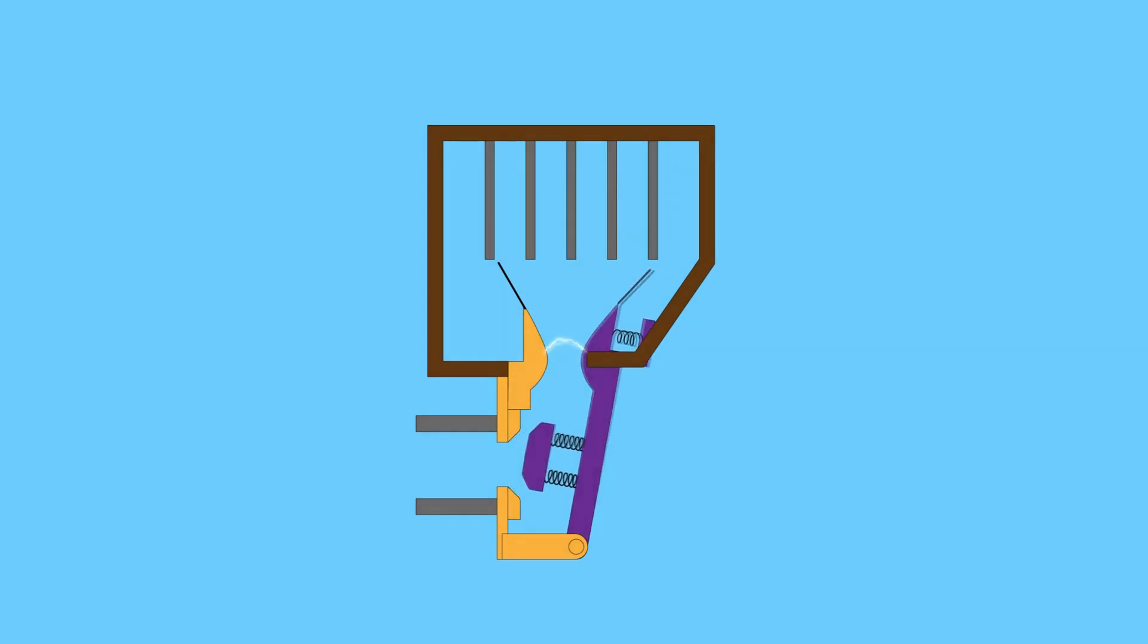When the main contacts open, the arcing contacts are still in touch with each other. The current gets a parallel low resistive path through the arcing contact. During the opening of the main contacts, there will not be any arcing in the main contact. The arcing is only initiated when the arcing contacts are finally separated.